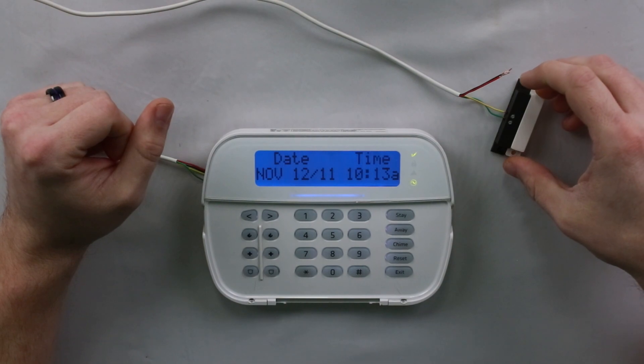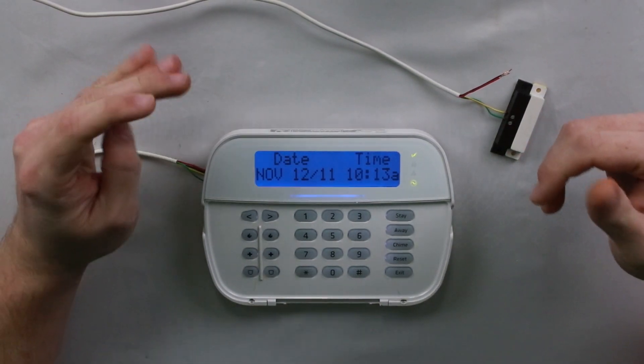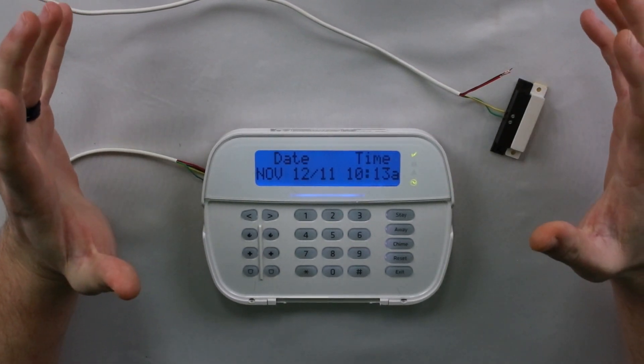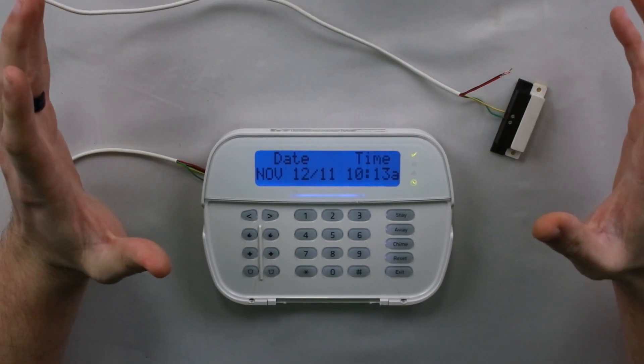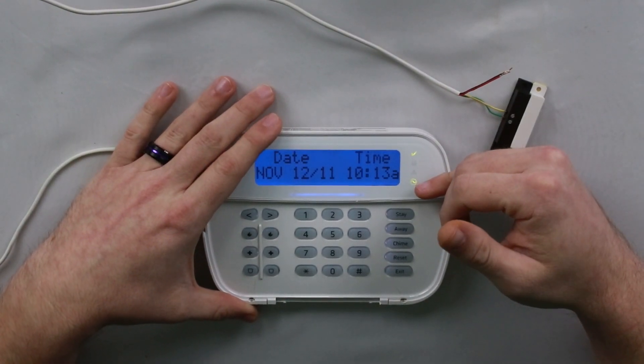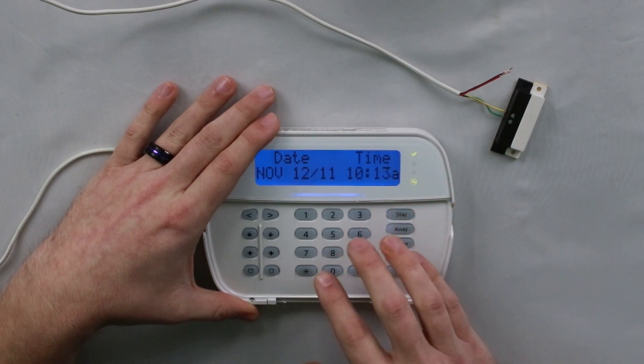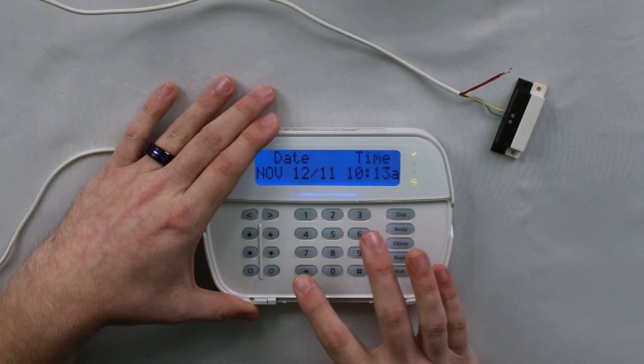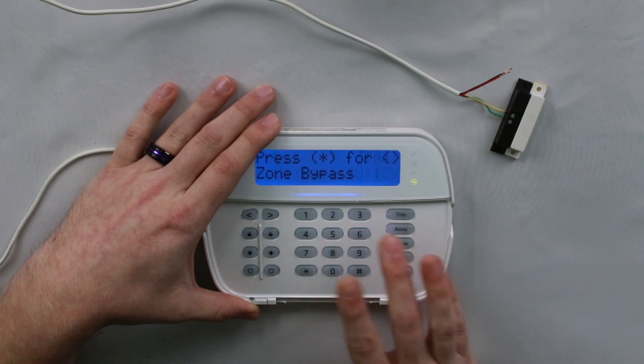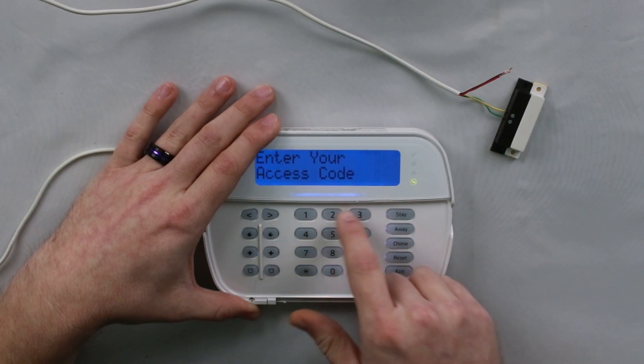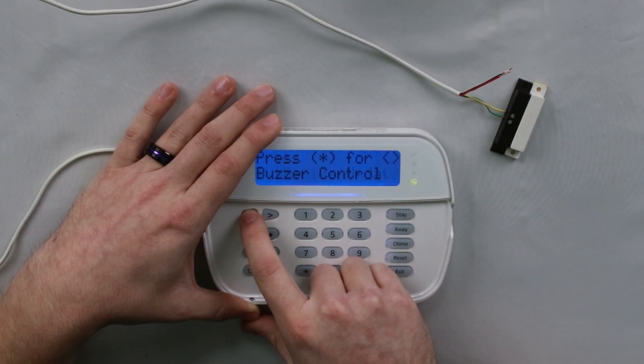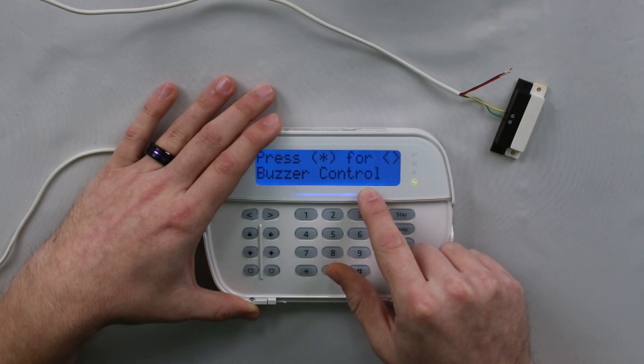There are other options as well. The next simplest one is how to change the buzzer of the chime. This is going to change the tone of this individual keypad. If you go into the master user settings, which is star six, enter your master code, and then scroll left until you find buzzer control.